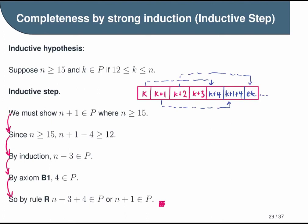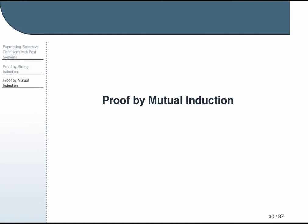So that concludes our example of a proof by strong induction for the postage stamp problem. In the next video, we will look at a proof by mutual induction of a property of rooted trees.